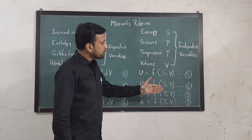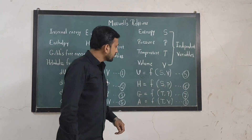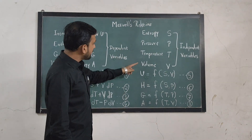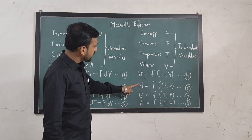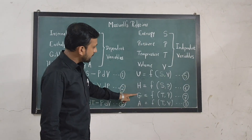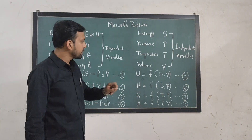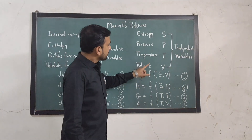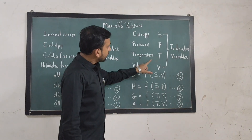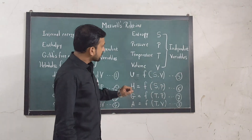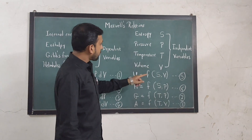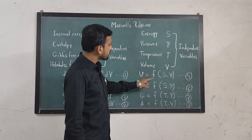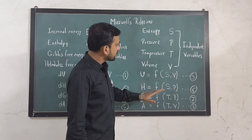From equation number five to eight we can establish the relation that all these dependent variables — internal energy, enthalpy, Gibbs free energy, and Helmholtz free energy — are functions of different types of independent variables. For example, from equation five we can say that internal energy is a function of entropy and volume.